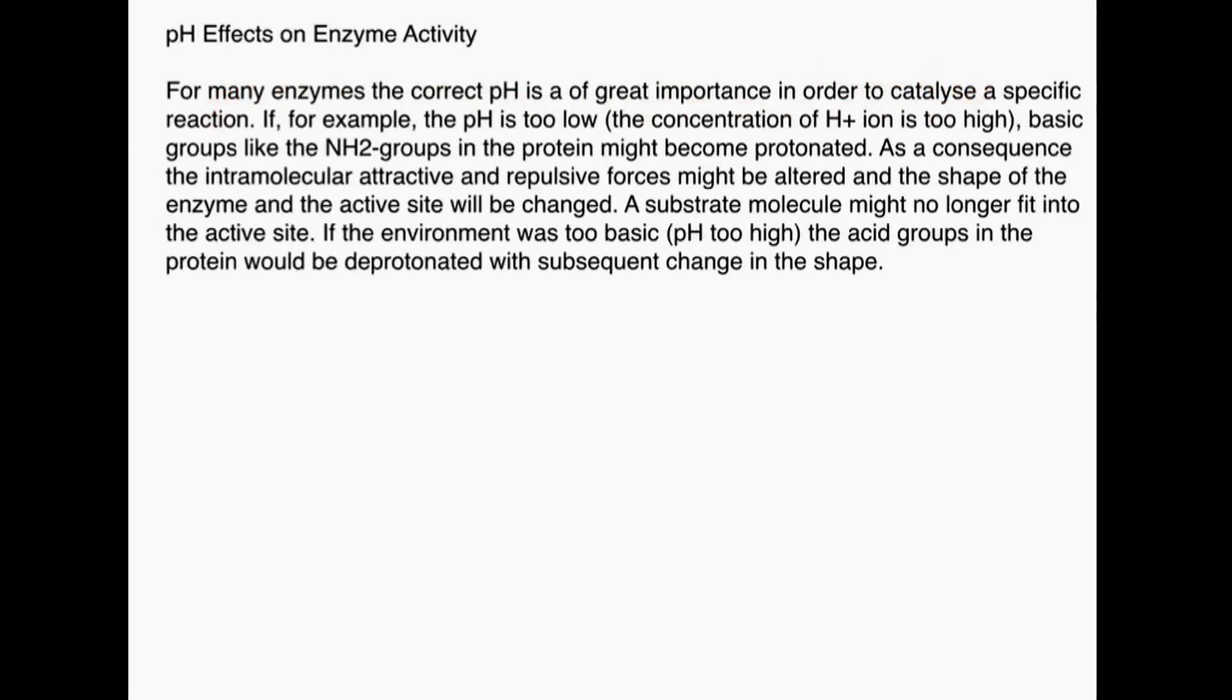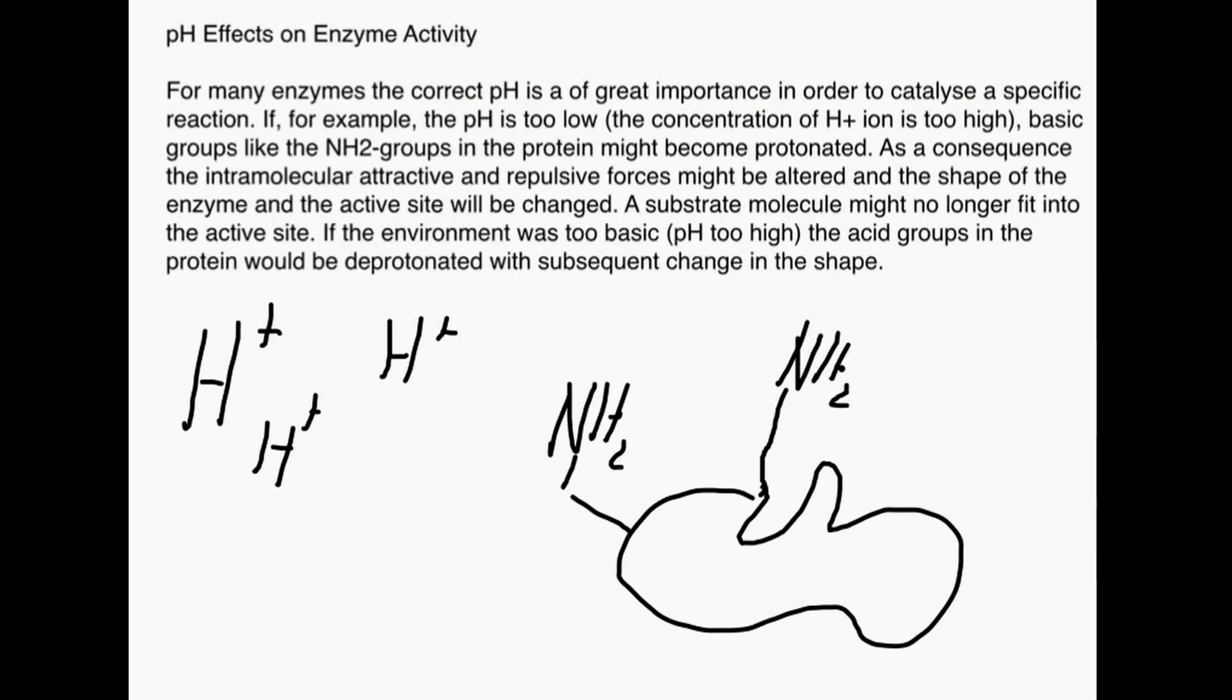If, for example, the pH is too low, that means we have loads of protons around. What can happen is that basic groups in the protein—NH2 groups—become protonated. We might have another NH2 group here, again part of the protein. These amino groups become protonated.